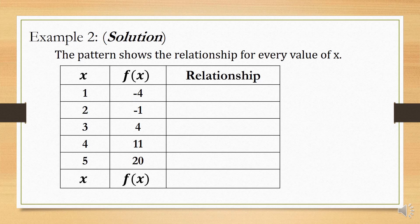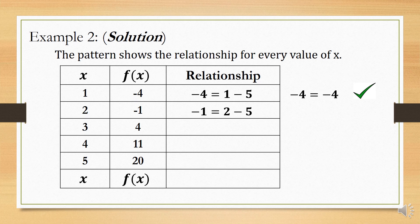Let's start with the first ordered pair. If x is 1 and f is negative 4, the possible relation we can get is that negative 4 is equal to 1 minus 5, which is correct. On the second ordered pair, we have negative 1 equal to 2 minus 5. However, negative 1 is not equal to 2 minus 5 — the result is negative 3. Therefore, it does not satisfy this relationship.